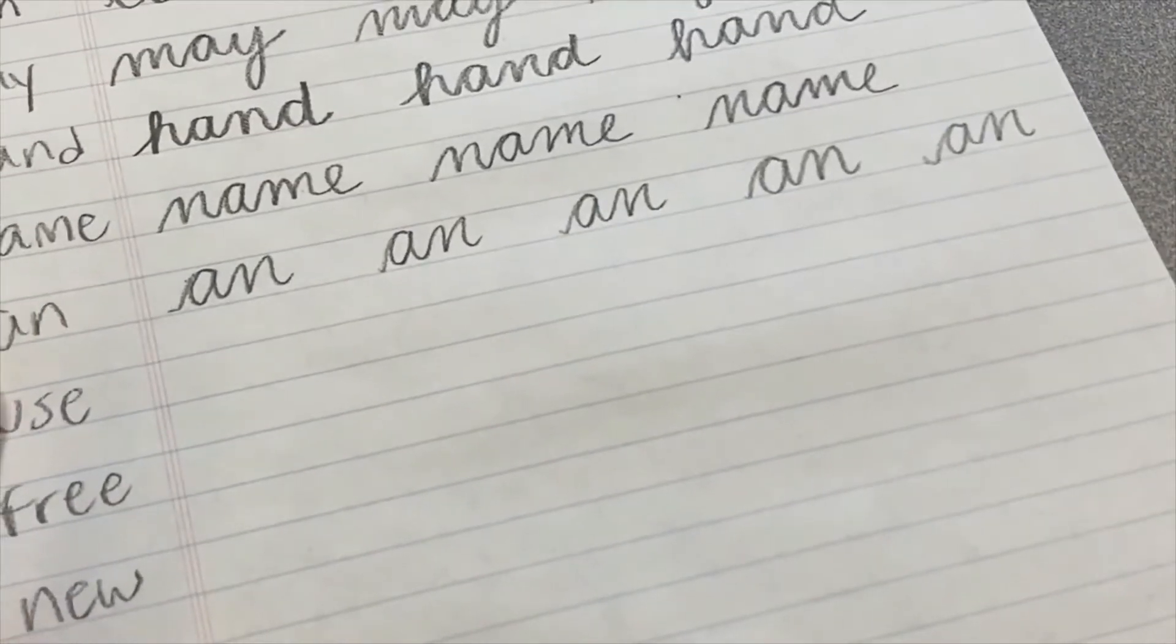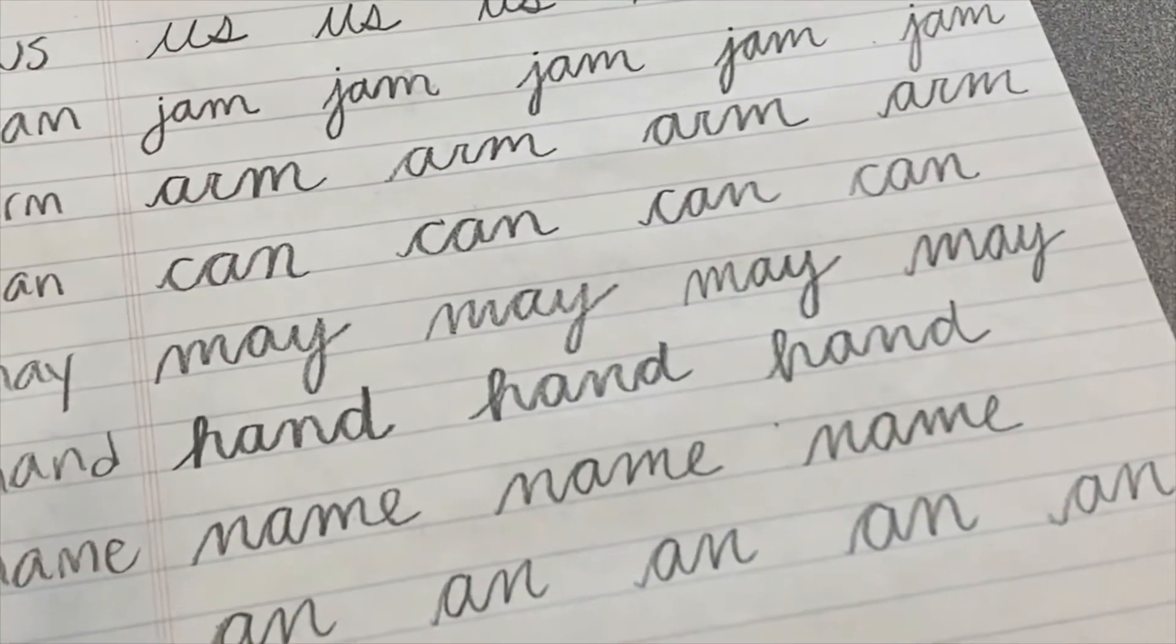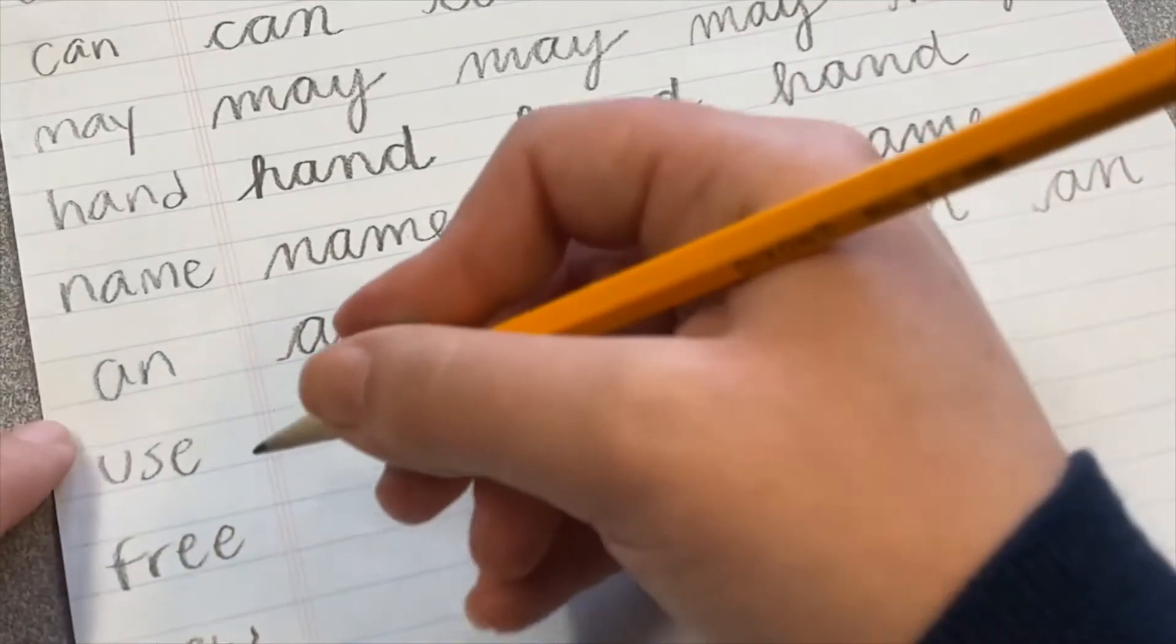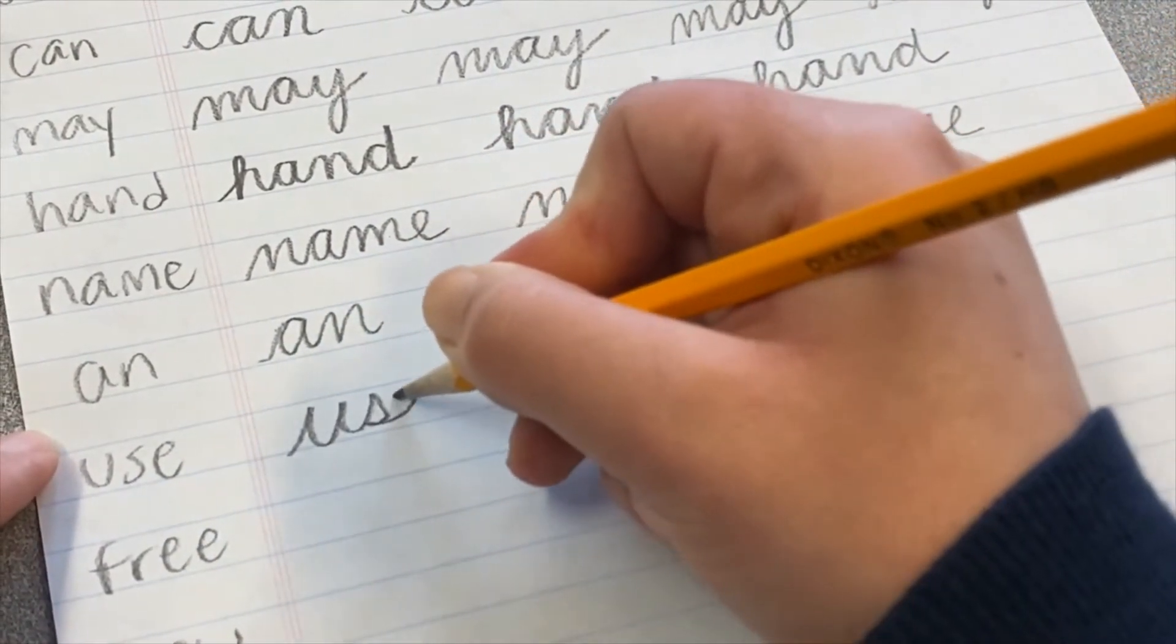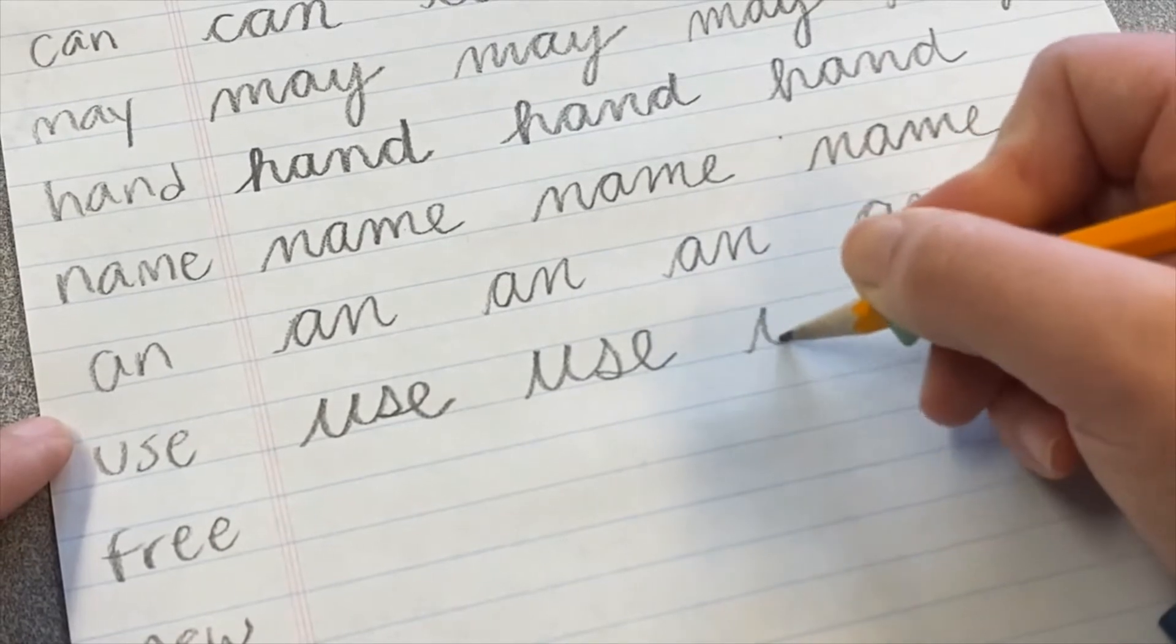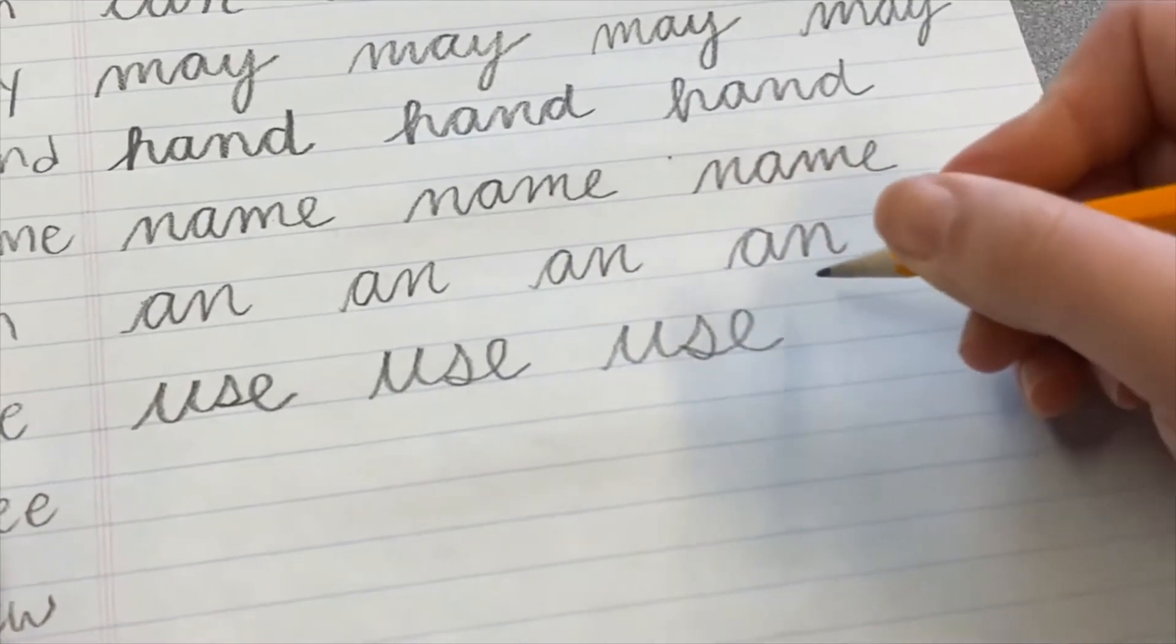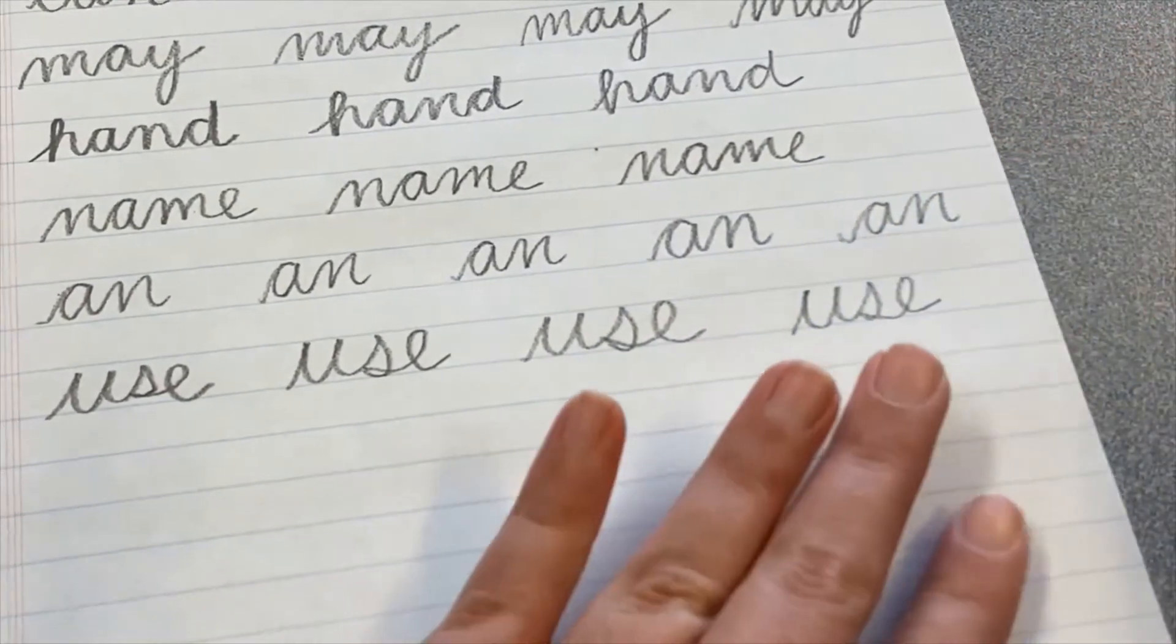The next word we'll do is the word use. So remember, we did us before, and now we'll just add an E on the end. U-S-E. U, sailboat S, in around for the E.